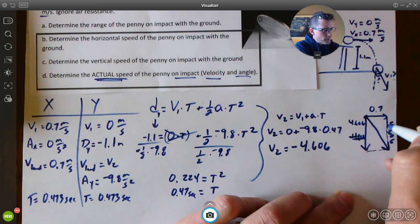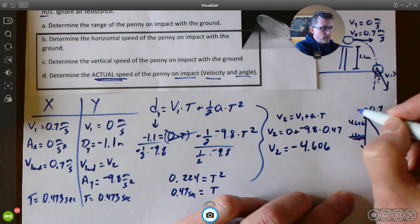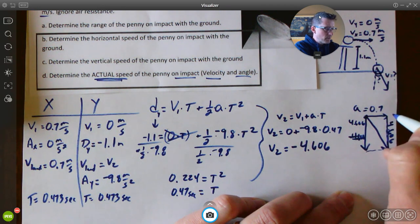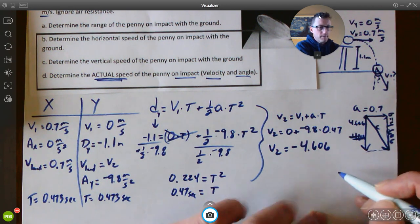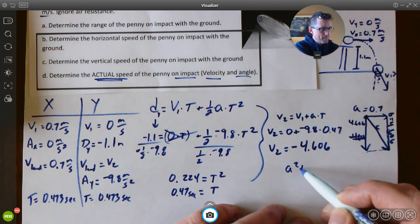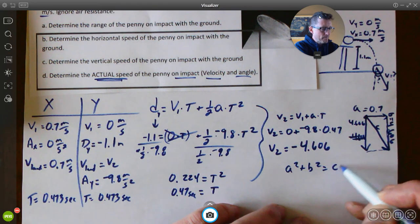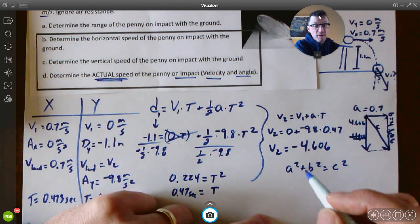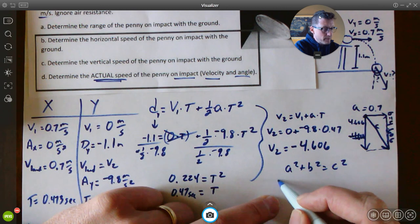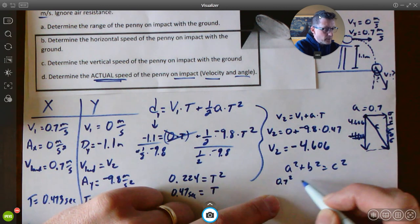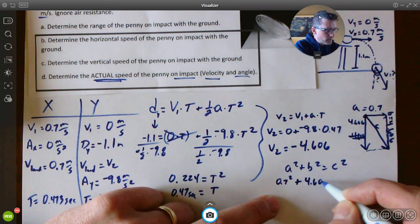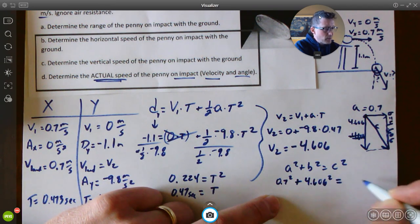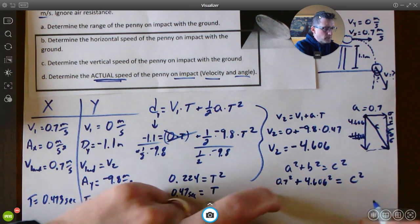So, if we're trying to figure out this length here, this is a Pythagorean theorem sort of question, where we have A squared plus B squared equals C squared, right? So, you can just pick a side for your A and your B. It doesn't really matter. It's both the same. It gives you the same answer. So, I'm just going to pick 0.7 as my A, 4.606 as my B, and those are going to equal C squared.